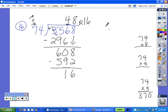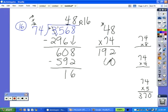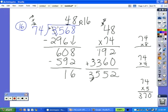To do your check work, you multiply the quotient, 48, times the divisor 74. And then we add in the remainder, and it matches the dividend.